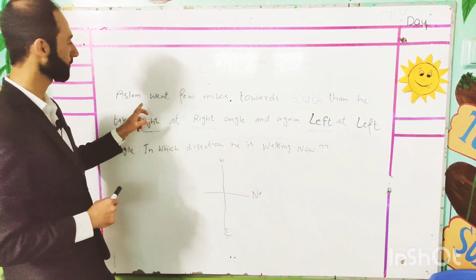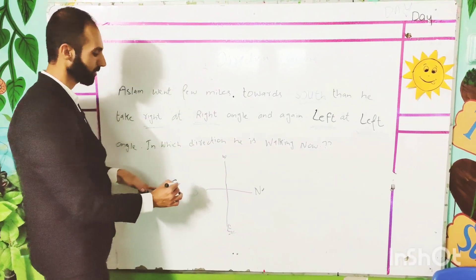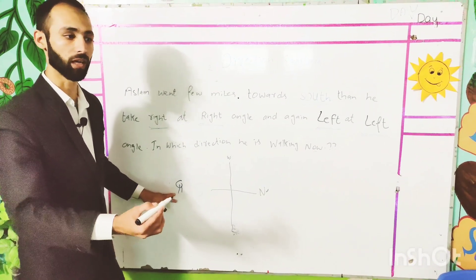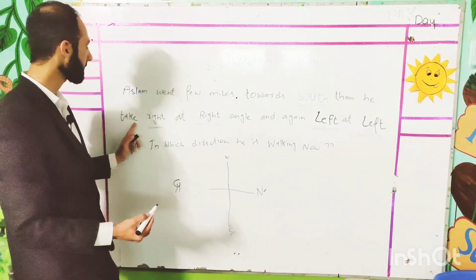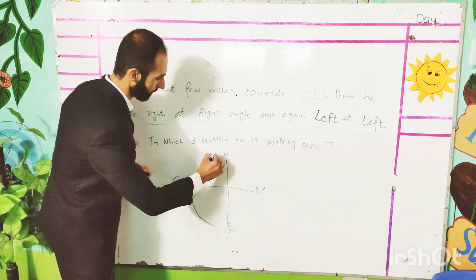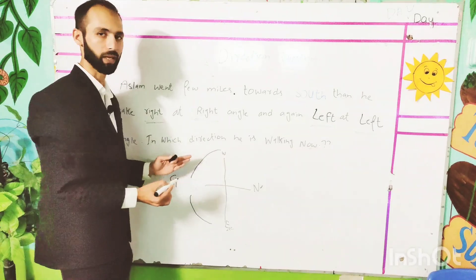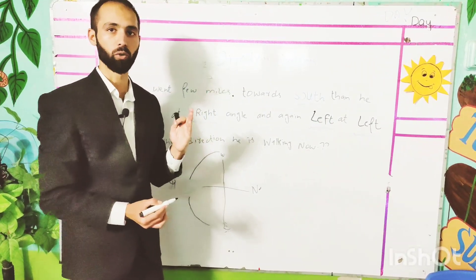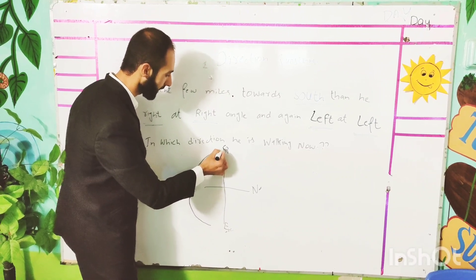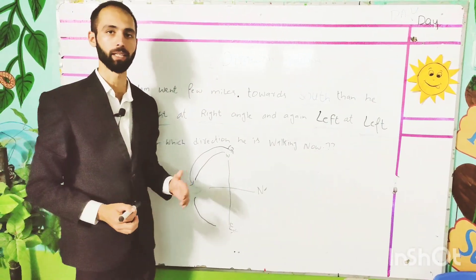First, we will see that Aslam has started. Aslam went few miles towards south — this is Aslam here. Now we will see that he is on the right side, whether he is on the right or left. Then he took right at right angle. When facing south, his right is west — when he moved, he reached west. And again, left at left angle. Where is left from west? That brings him back to south. So Aslam has come back to south — back where he started direction-wise.